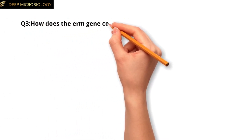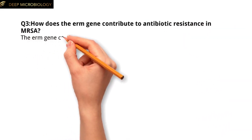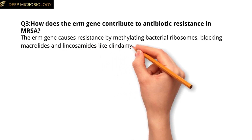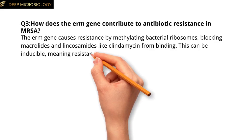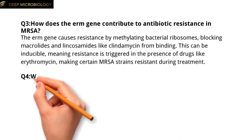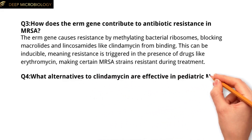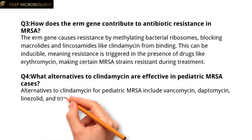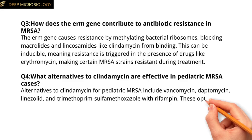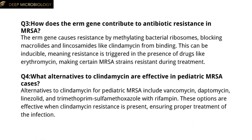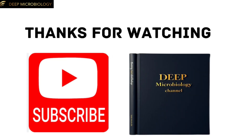Question 3: How does the ERM gene contribute to antibiotic resistance in MRSA? The ERM gene causes resistance by methylating bacterial ribosomes, blocking macrolides and lincosamides like clindamycin from binding. This can be inducible, meaning resistance is triggered in the presence of drugs like erythromycin, making certain MRSA strains resistant during treatment. Question 4: What alternatives to clindamycin are effective in pediatric MRSA cases? Alternatives include vancomycin, daptomycin, linezolid, and trimethoprim-sulfamethoxazole with rifampin. These options are effective when clindamycin resistance is present, ensuring proper treatment of the infection.